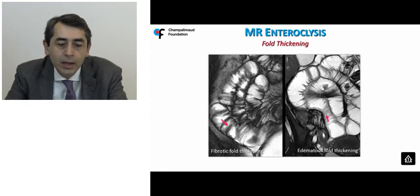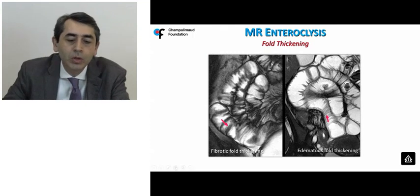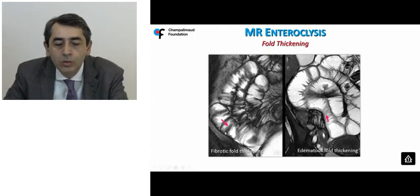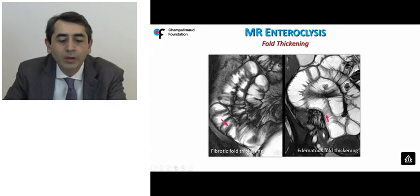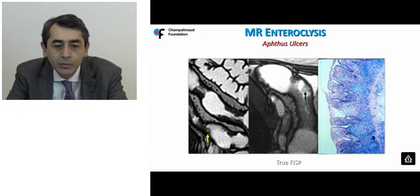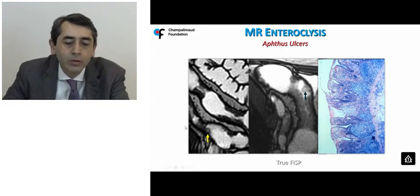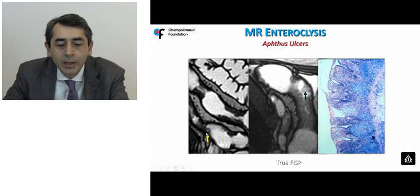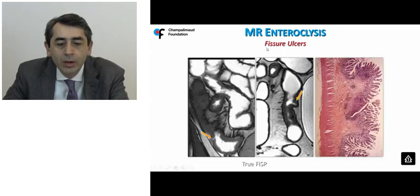MR enteroclysis combines adequate luminal distension with high-resolution TruFISP imaging, enabling discrimination and characterization of wall thickening — fibrotic versus edematous. It is possible to detect aphthous ulceration with a typical volcano-type appearance featuring a central area of high signal intensity and a low signal intensity rim, as well as fissuring ulcers appearing as linear high-signal-intensity structures penetrating the thickened bowel wall.